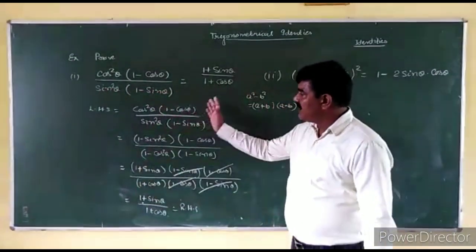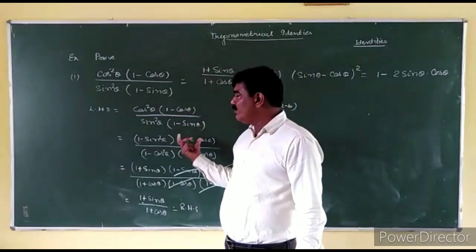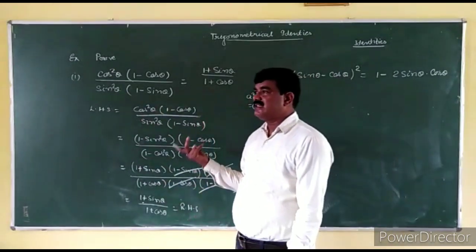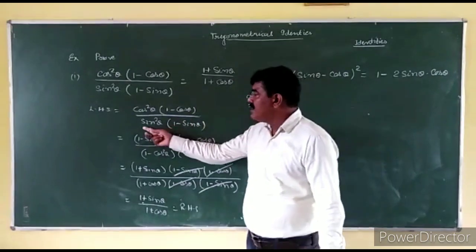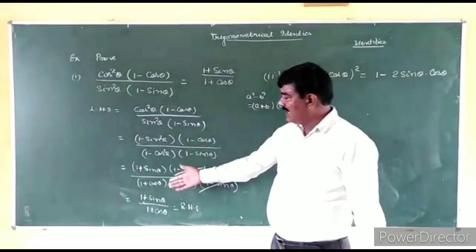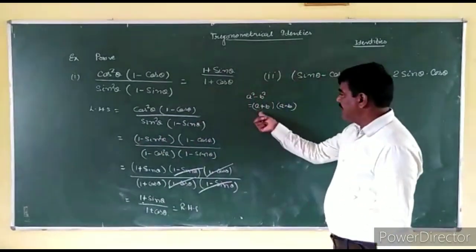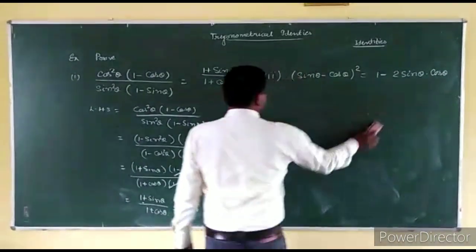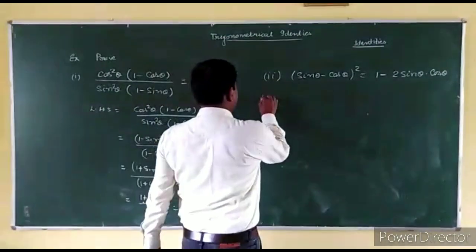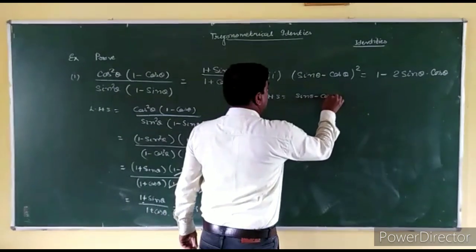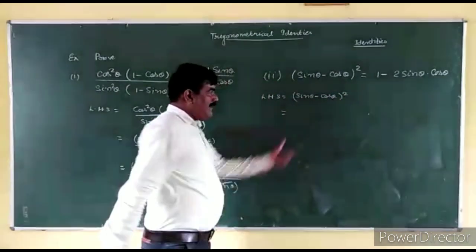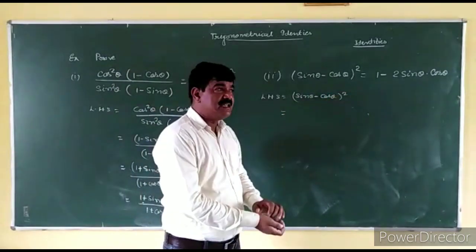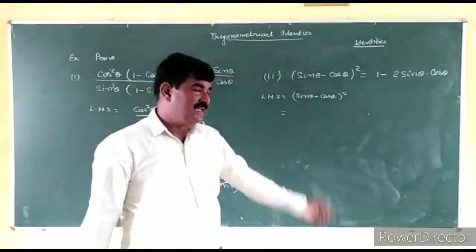You can see that a direct formula can be applied. After that, you have to apply the formula a square minus b square, which equals (a + b)(a - b). And (a - cos theta) whole square — recognizing it is in the form of (a - b) whole square.